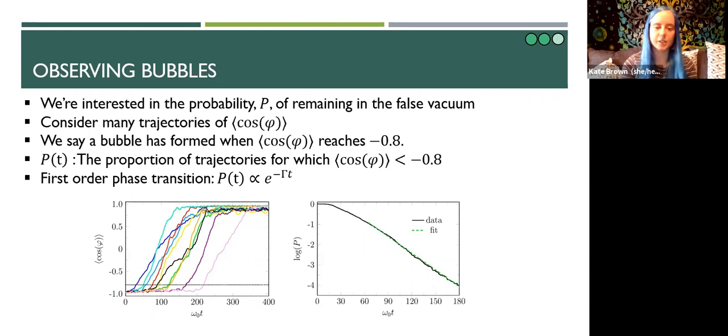We can use these trajectories to calculate the survival probability of remaining in the metastable state. For this, we actually used a thousand simulation runs at each temperature. Because of the stochastic aspect of our equation, we find that we have some fluctuation about minus one before bubble growth occurs. Just to keep on the safe side, we only register that a bubble has formed once these trajectories reach minus 0.8.